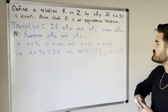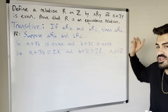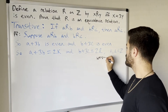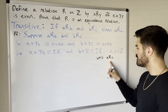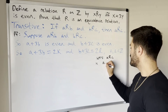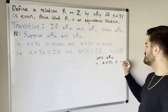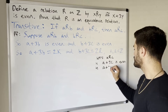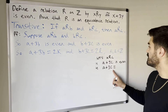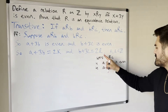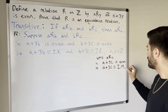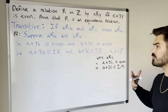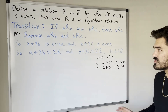We want to show a is related to c, which means we want to show a plus 3c is even — more precisely, that a plus 3c equals 2m for some integer m. Let's keep this in mind as our goal. When learning proofs it's really important to clearly identify what you want to show so you can think about how to get there.